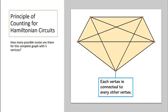For example, how many possible routes are there for this complete graph with five vertices? Well, n minus 1 factorial would be 4 factorial. 4 times 3 times 2 times 1, or 24 possible routes.